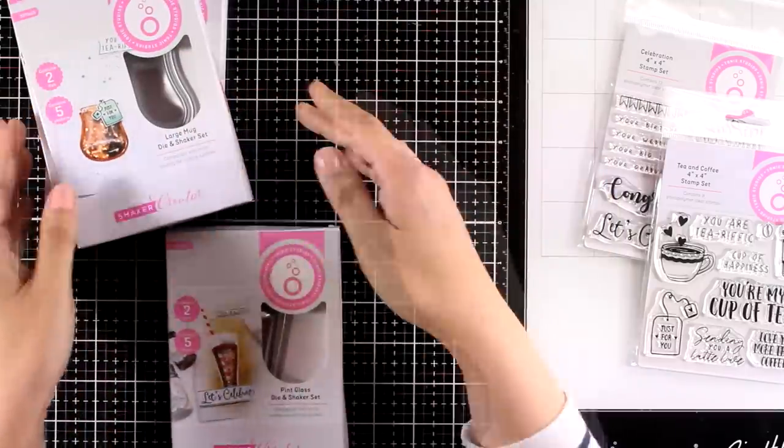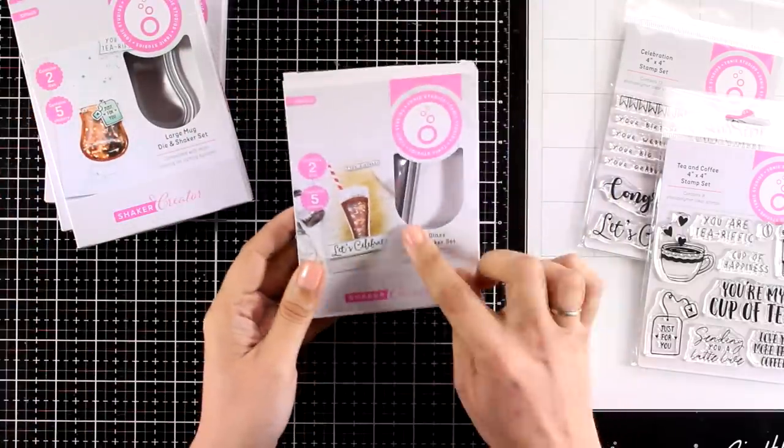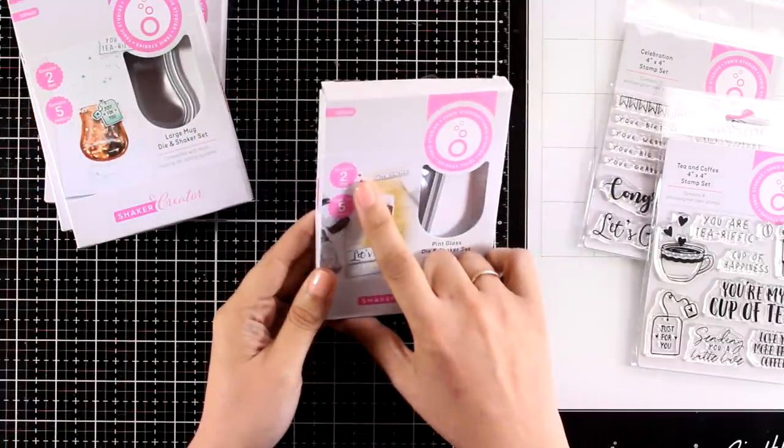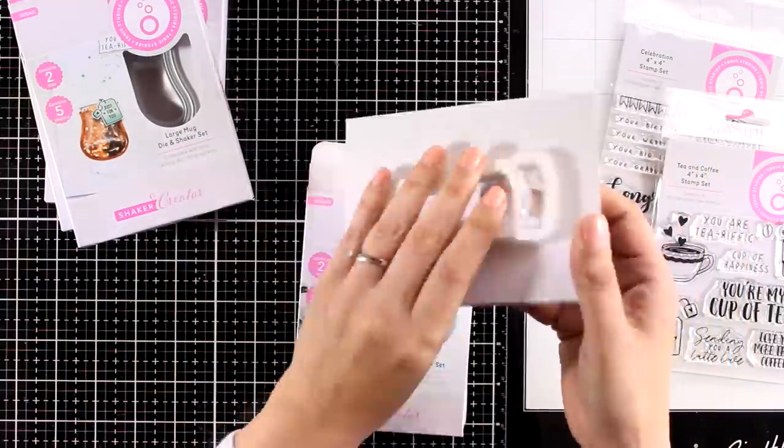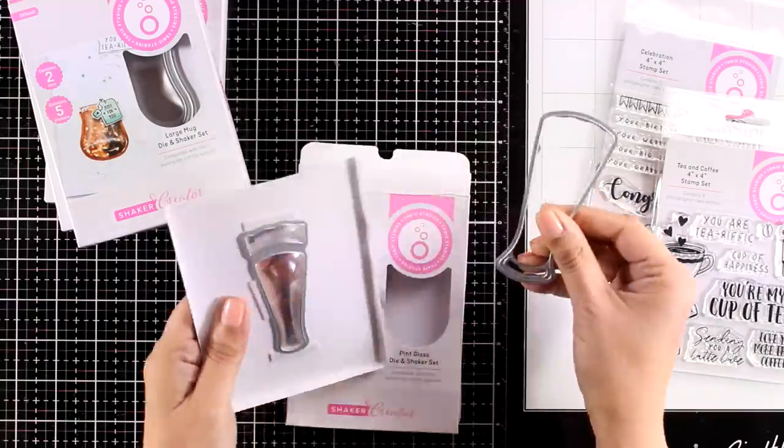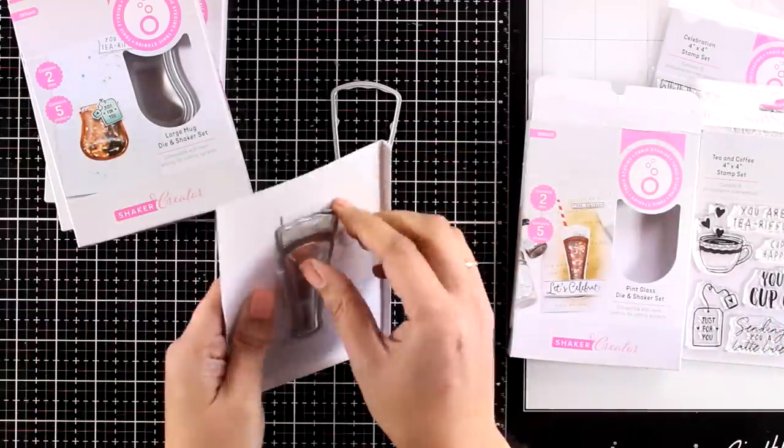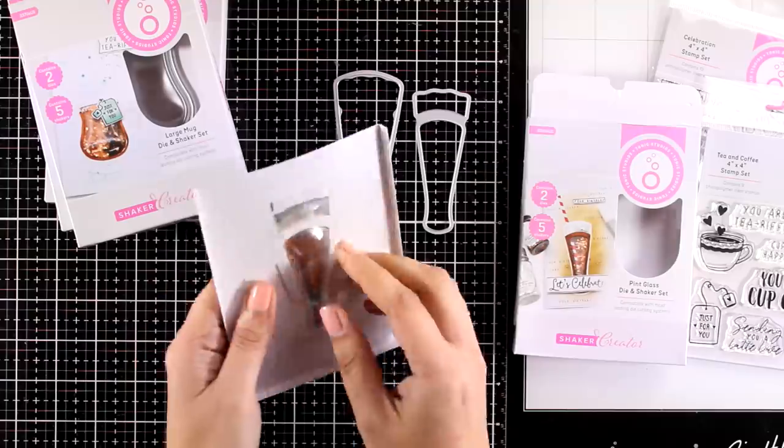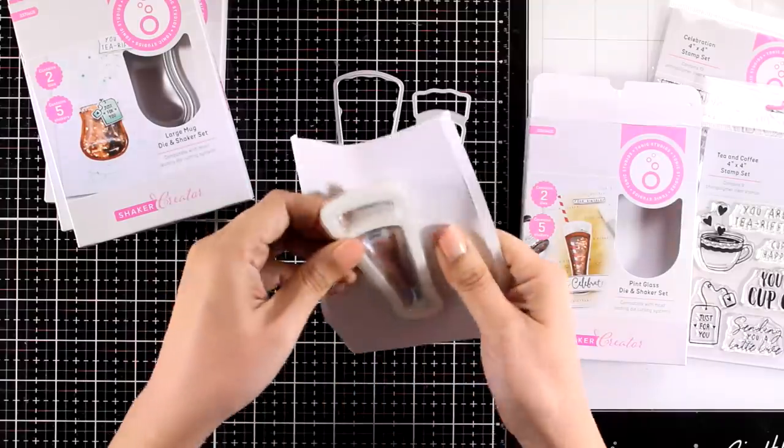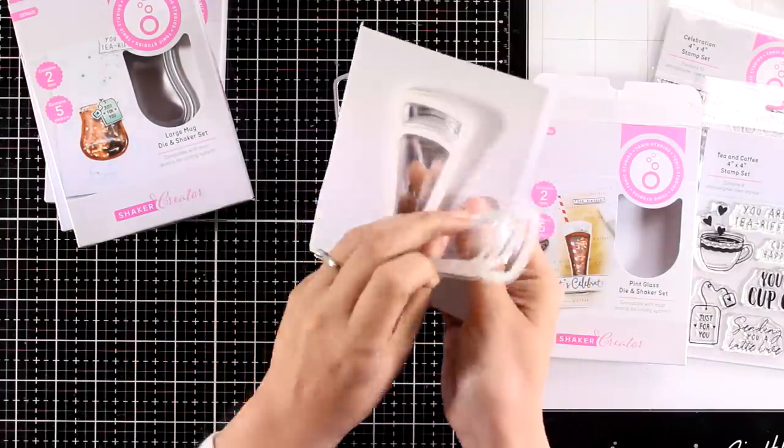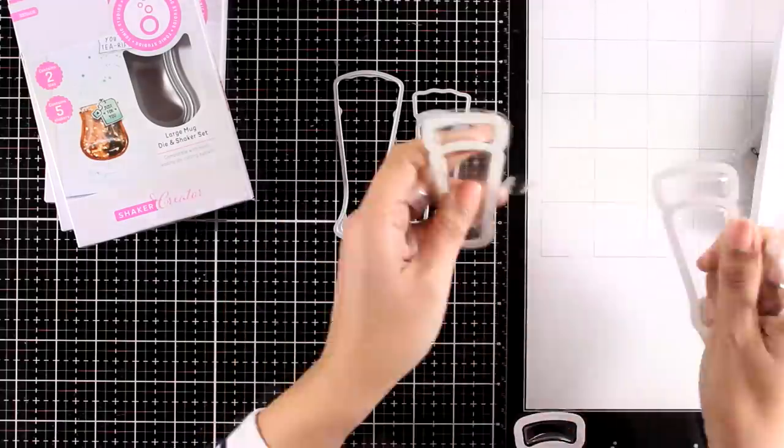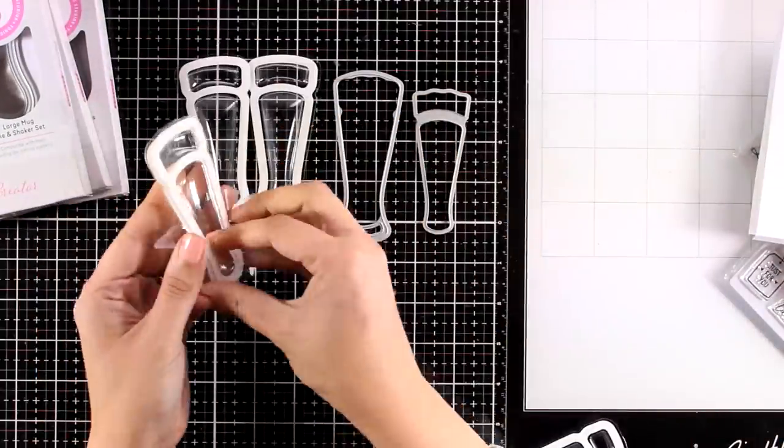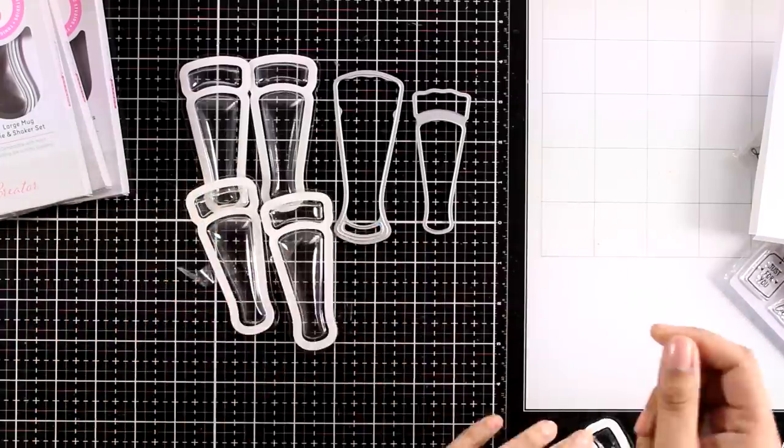You even get a teapot which I don't have here. All of them include two dies inside as well as five pouches that fit perfectly in the dies to create your glasses. This is where you will put your shaker elements inside and you can fill them in with sequins, you can fill them with glitter, anything you like really.